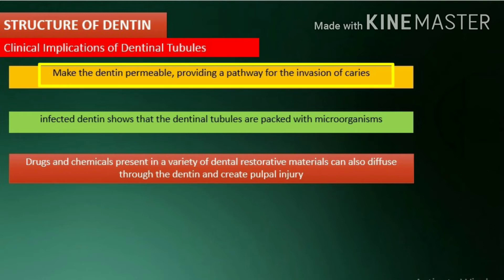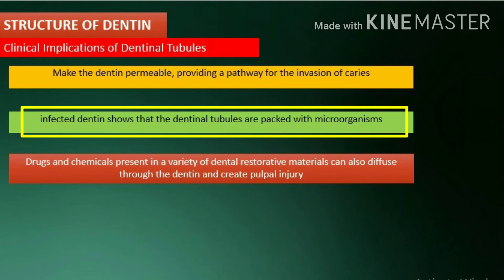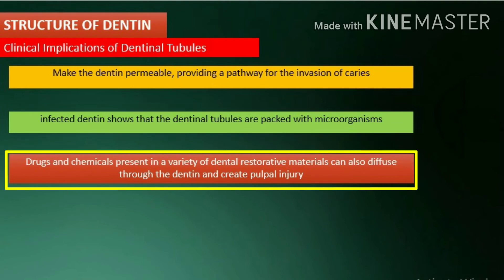Clinical implications of dentinal tubules: they make dentin permeable, providing a pathway for the invasion of caries. Microscopic examination of infected dentin shows that the dentinal tubules are packed with microorganisms. Drugs and chemicals present in a variety of dental restorative materials can also diffuse through the dentin and create pulpal injury.